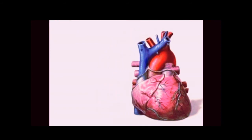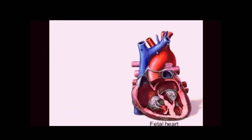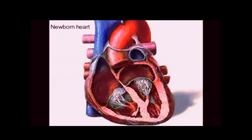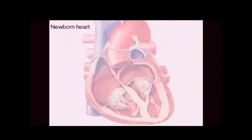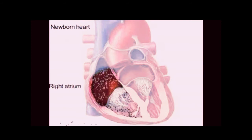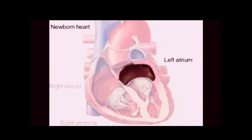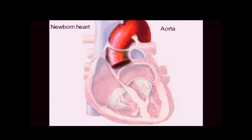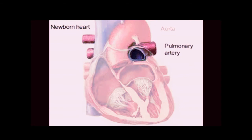But the resemblance is only superficial. On the inside of the heart, things are much different in both form and function. Here's a newborn heart. There's the right atrium, right ventricle, left atrium, and left ventricle. The two major blood vessels are the aorta and the pulmonary artery.